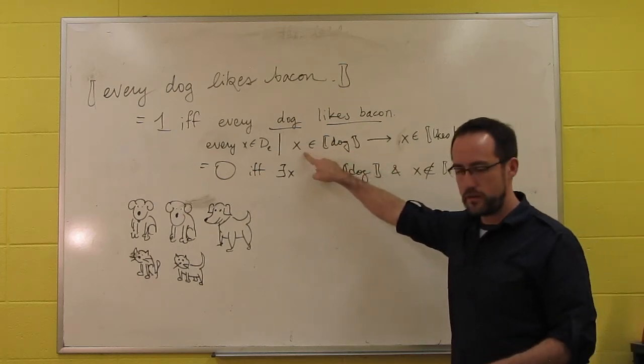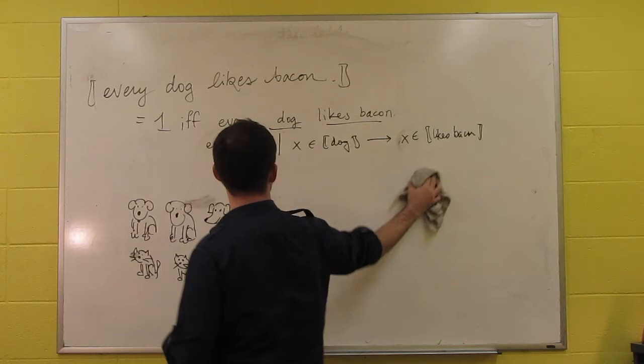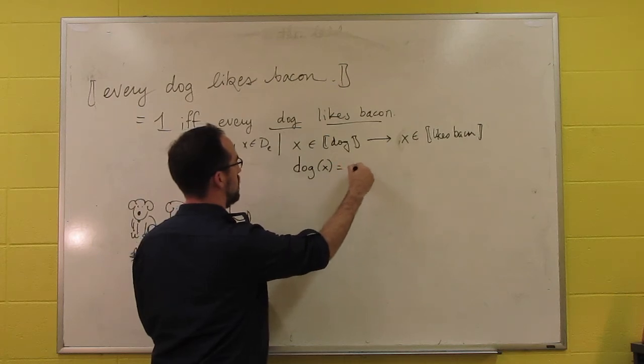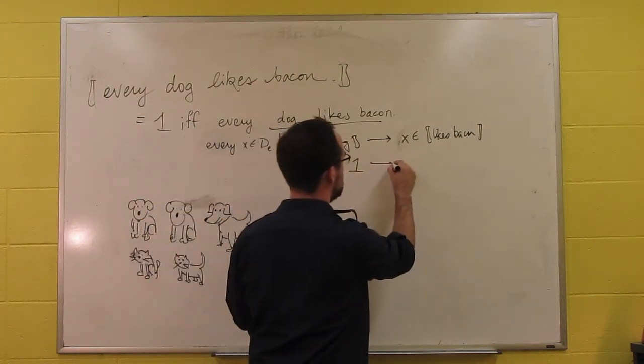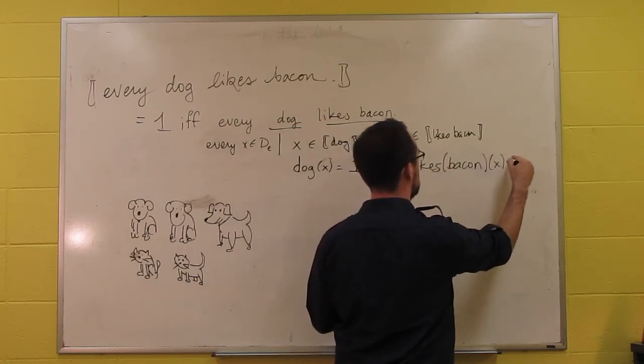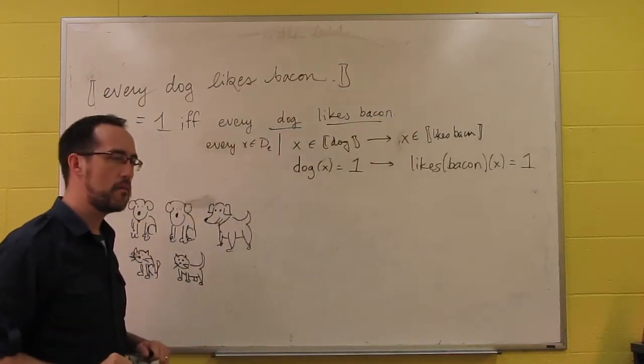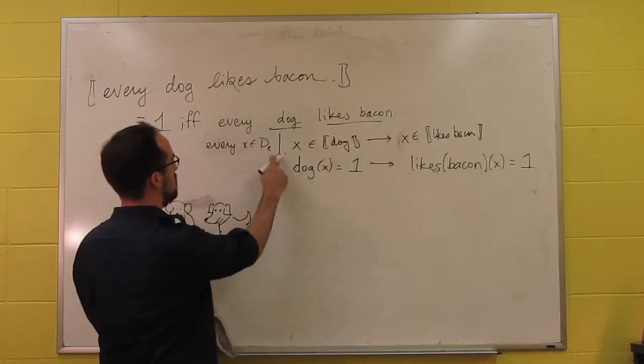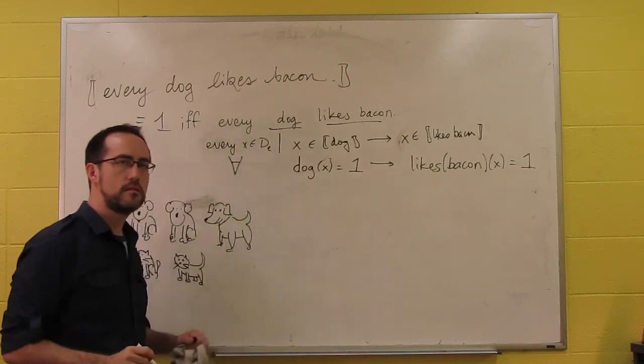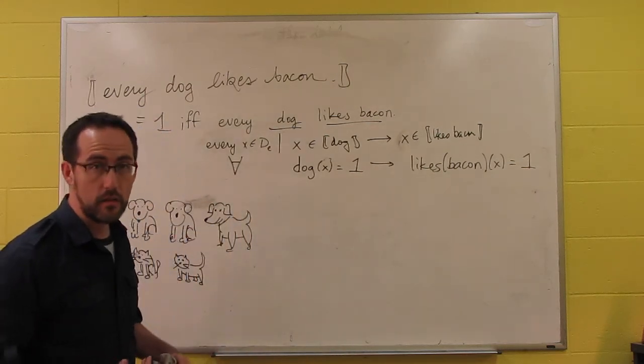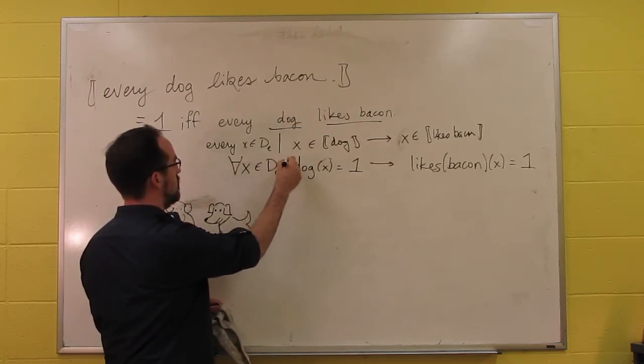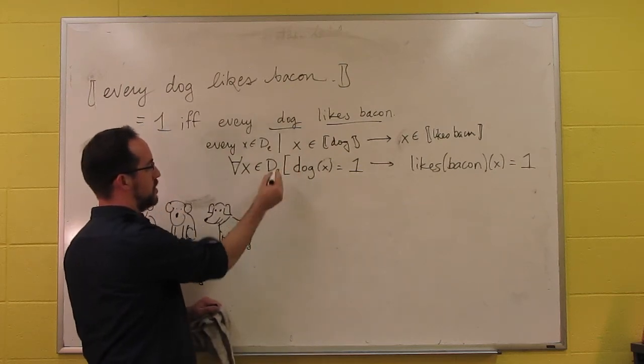Now, we've seen that we can replace X is a dog with the function dog of X equals 1. And then we can replace likes bacon with equals 1. Instead of writing every, we write the universal quantifier with the symbol upside down A, or a turned A.